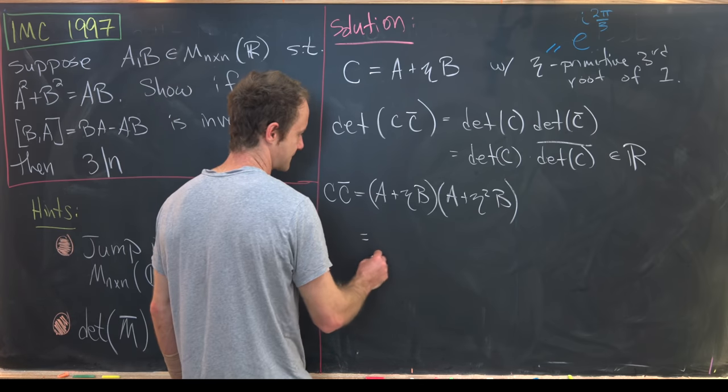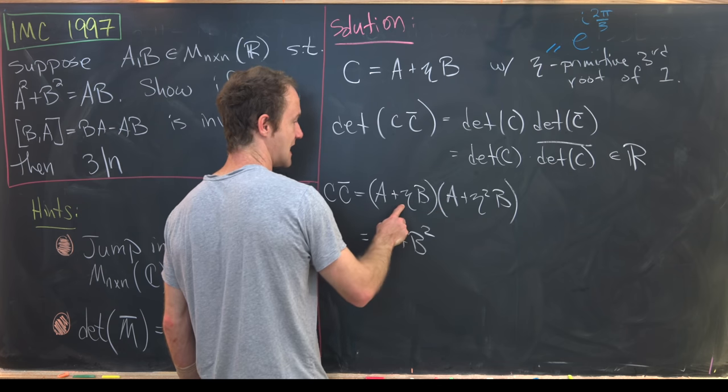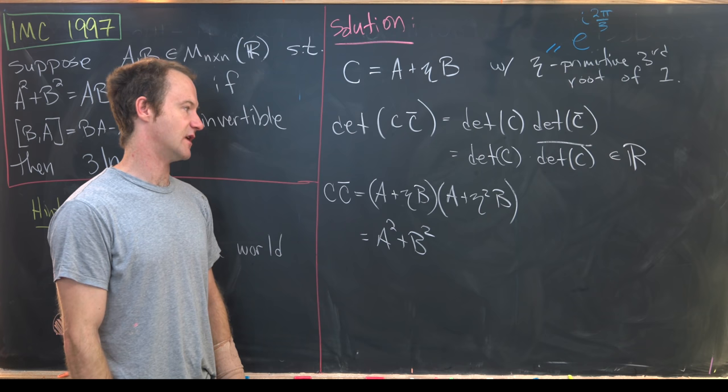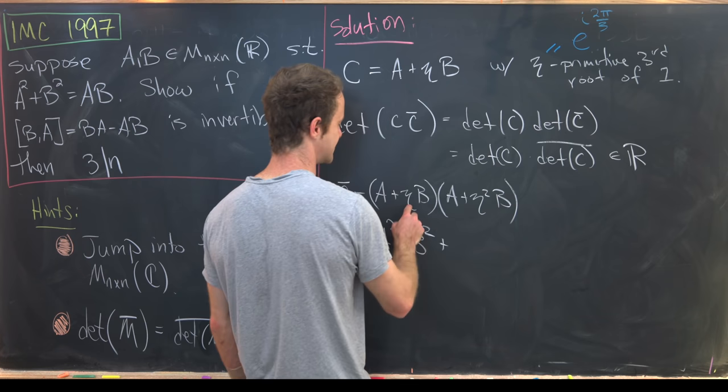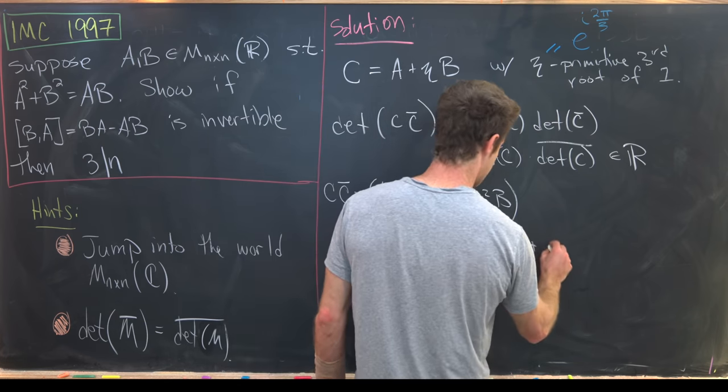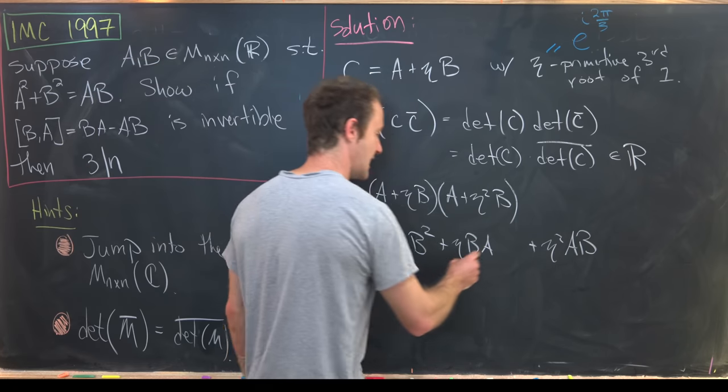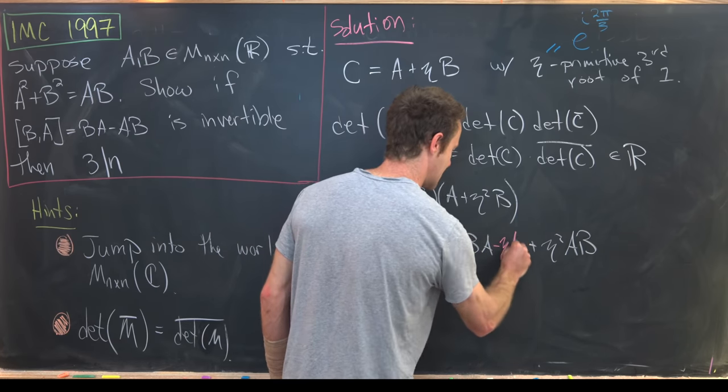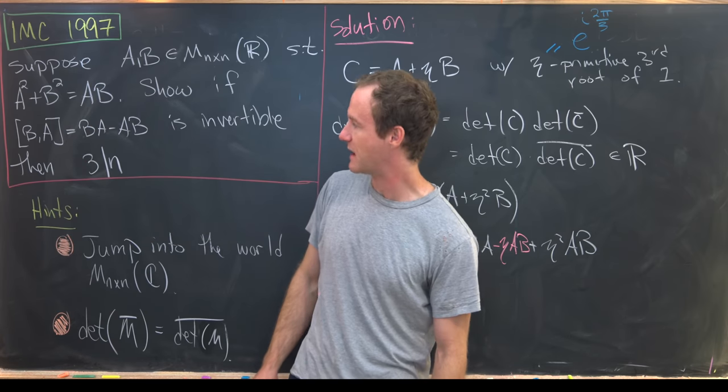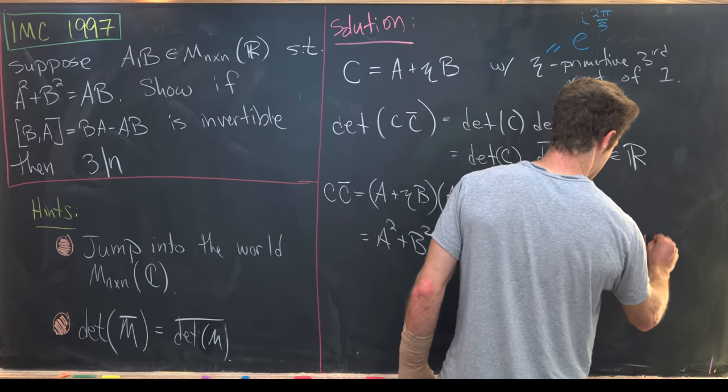So now we can multiply this out. This will give us A squared plus B squared. So that's A times A, B times B, eta times eta squared is eta cubed. But since it's a primitive third root of unity, that's just the number one. And then we'll have plus eta times BA, and then plus eta squared times AB. Here I will subtract eta times AB. Why do I want to do that? Because I'm trying to get this object BA minus AB into the situation. But that means over here, I need to add eta times AB.